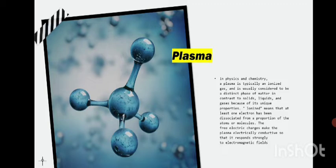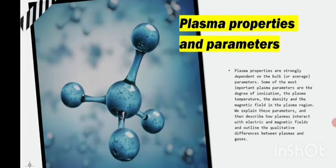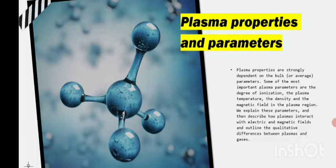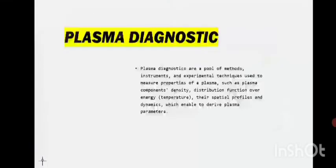Plasma properties and parameters: plasma properties are strongly dependent on the bulk parameters. Some of the most important plasma parameters are the degree of ionization, plasma temperature, the density, and magnetic field in the plasma region.